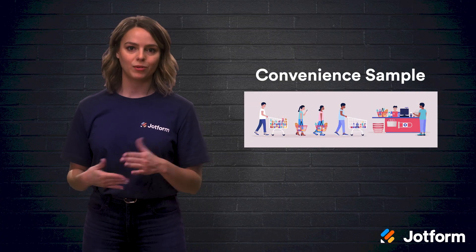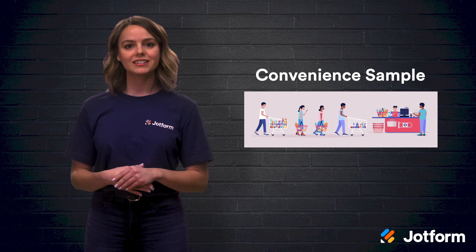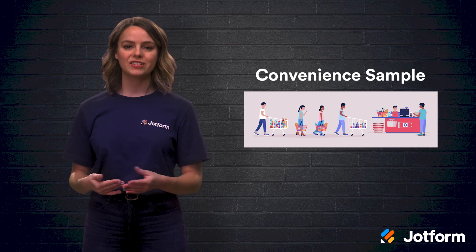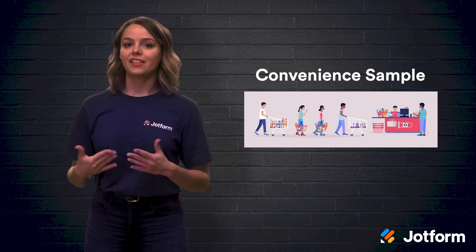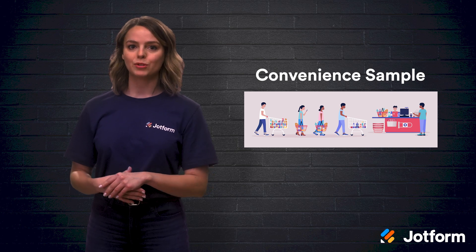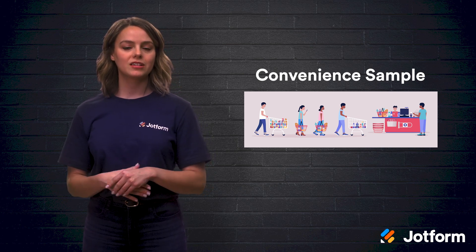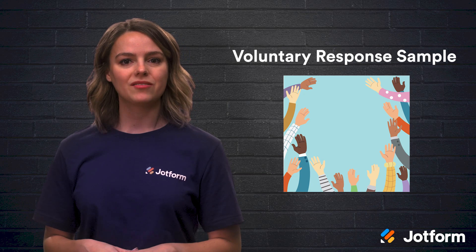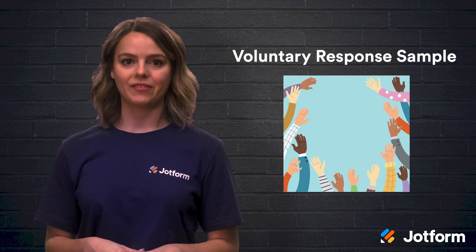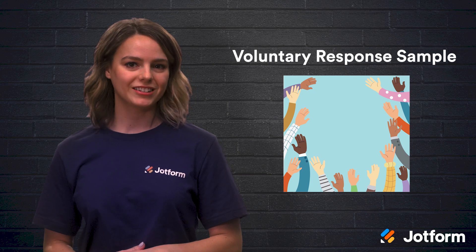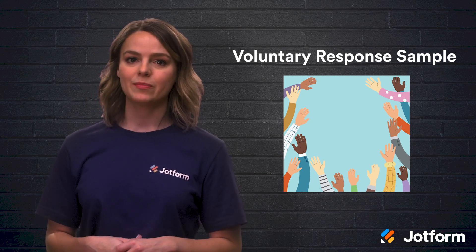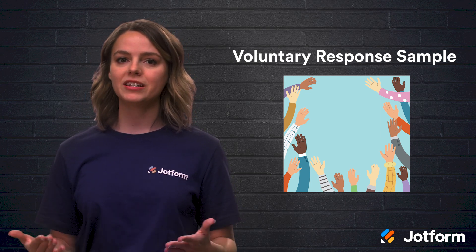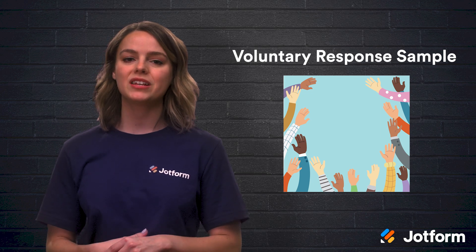First, there's the convenience sample method, which involves selecting a sample that's already available. For example, a retailer who gives a discount to shoppers in exchange for completing a questionnaire — that sample would only include the shoppers who participated, but their answers would still be useful to the owner of the store. Then there's the voluntary response sample. A common example of this is the online public survey in which researchers collect data from volunteers. The samples are always biased because the people most likely to participate are those who have strong feelings about the subject, and their opinions might not be representative of the overall population.